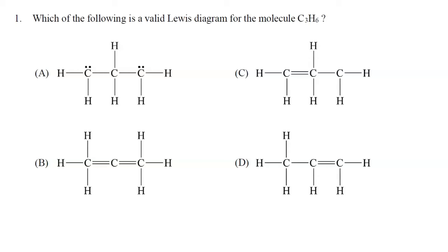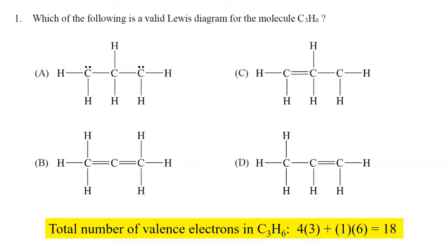Question 1 says, which of the following is a valid Lewis diagram for the molecule C3H6? The first thing I'm going to do is count the total number of valence electrons that should be present in this Lewis diagram. Each carbon atom has 4 valence electrons, and there are 3 carbon atoms, so 4 times 3 is 12. Each hydrogen atom has 1 valence electron, and there are 6 hydrogen atoms, so 12 plus 6 is 18.